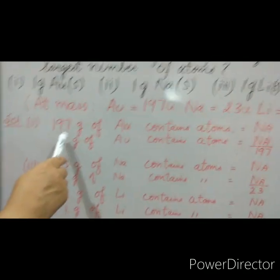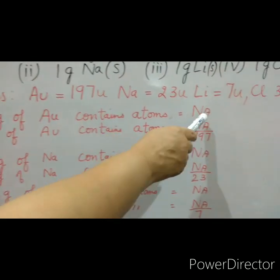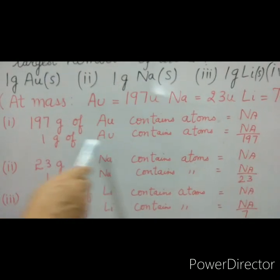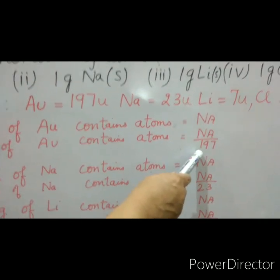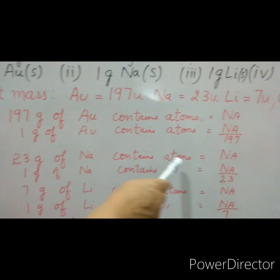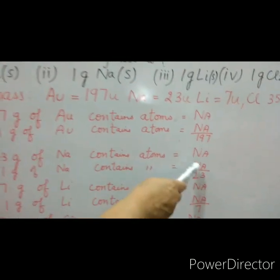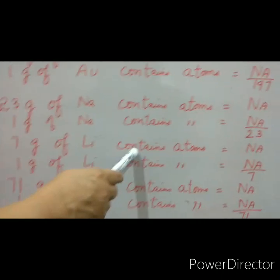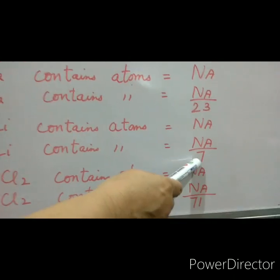How we will proceed: 197 grams of gold will contain atoms equal to Avogadro's number, so 1 gram of gold will contain Avogadro's number divided by 197 atoms. For sodium, 23 grams contain Avogadro's number of atoms, so 1 gram contains Avogadro/23. For lithium, 7 grams contain Avogadro's number, so 1 gram contains Avogadro/7.